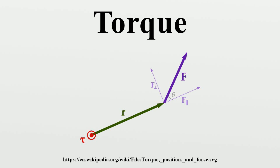Power is the work per unit time, given by where P is power, τ is torque, ω is the angular velocity, and · represents the scalar product. Algebraically, the equation may be rearranged to compute torque for a given angular speed and power output. Note that the power injected by the torque depends only on the instantaneous angular speed, not on whether the angular speed increases, decreases, or remains constant while the torque is being applied. In practice, this relationship can be observed in bicycles.